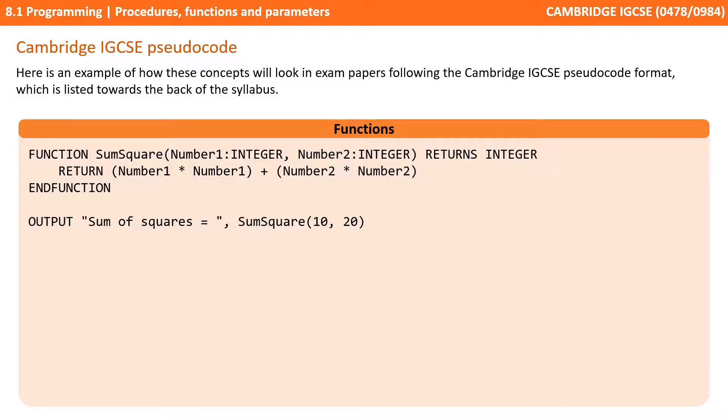Here's an example of a function being declared. It takes two parameters both integers number one and number two and it returns an integer.